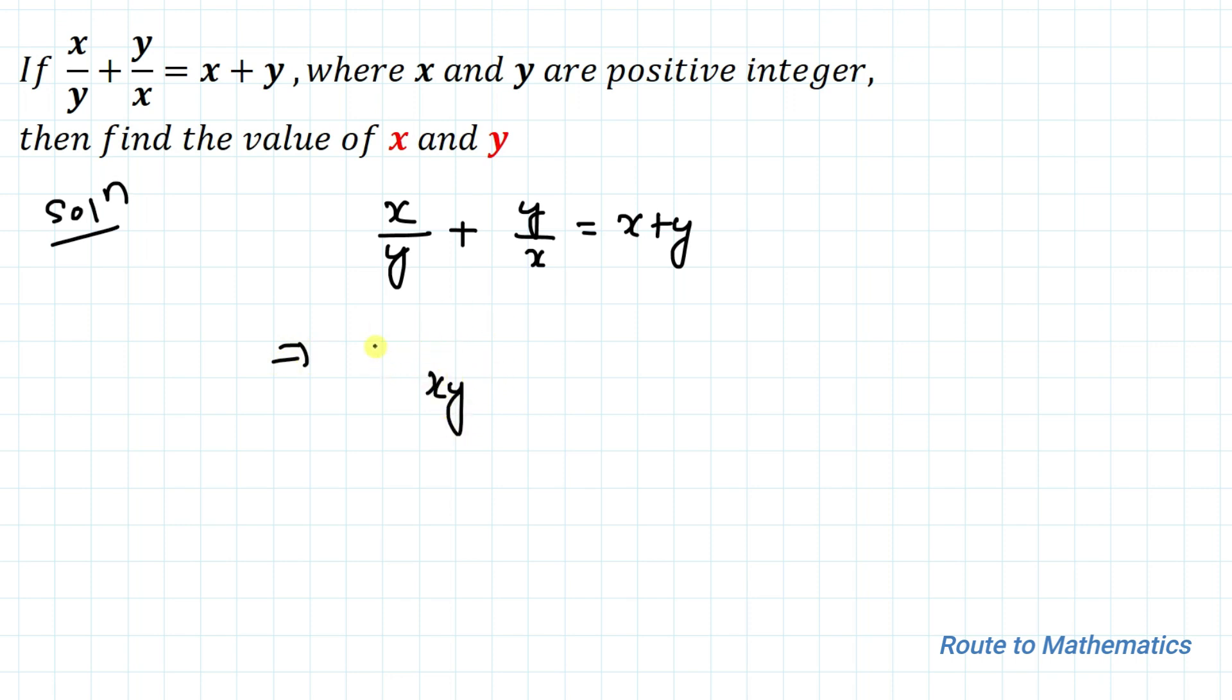We have x and y in the denominator part. By cross multiplication we have x squared plus y squared equals x plus y. Now, again doing cross multiplication, we have x squared plus y squared equals xy multiplied with x plus y.